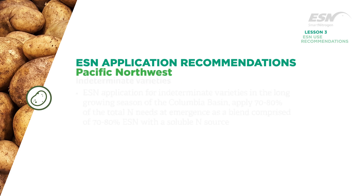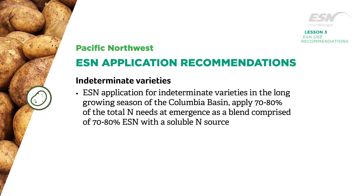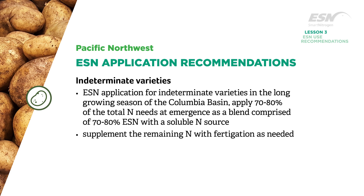For ESN application for indeterminate varieties in the long growing season of the Columbia Basin, apply about 70 to 80 percent of the total nitrogen needs at emergence as a blend comprised of 70 to 80 percent ESN with a soluble nitrogen source. Supplement the remaining nitrogen with fertigation as needed.